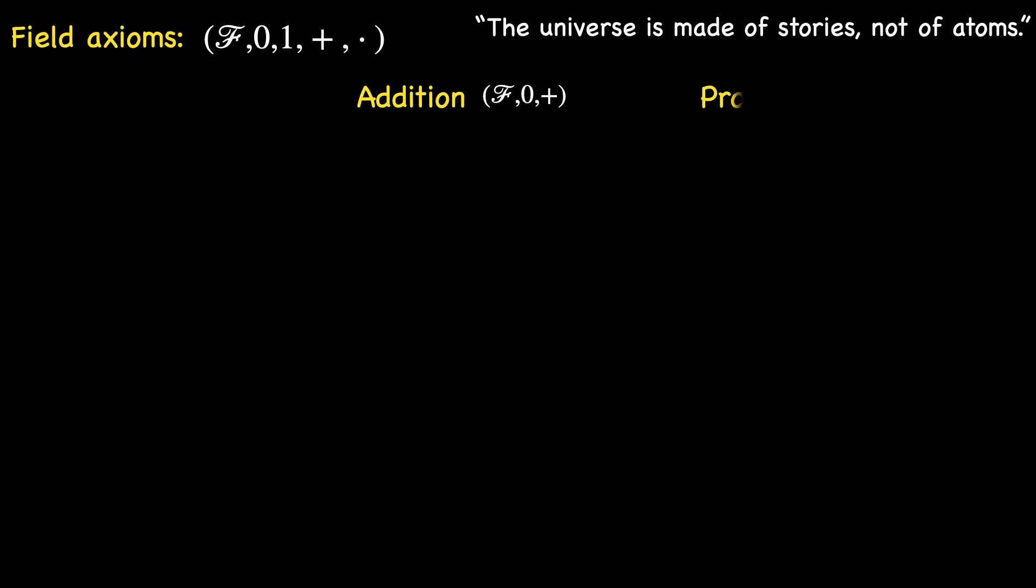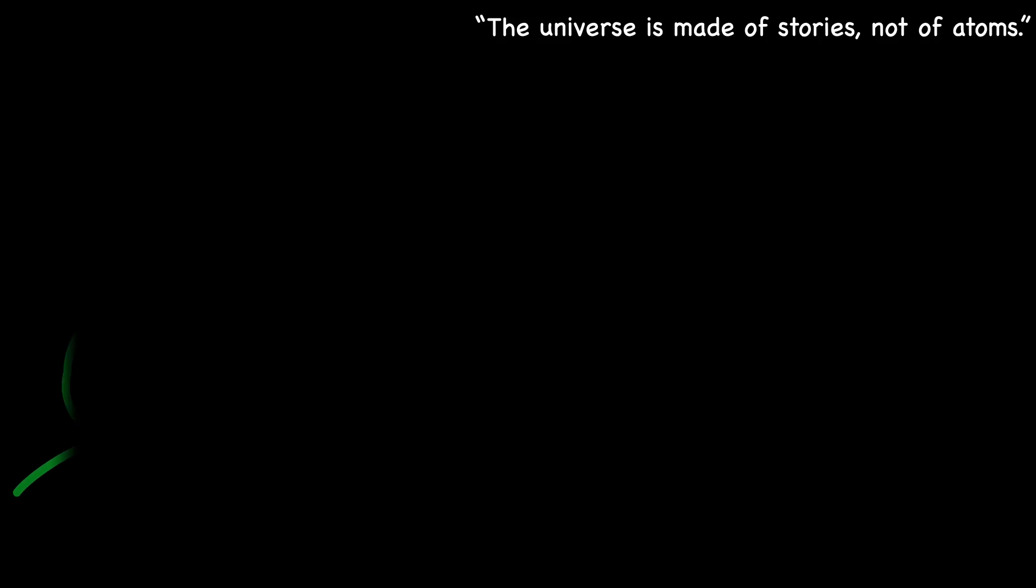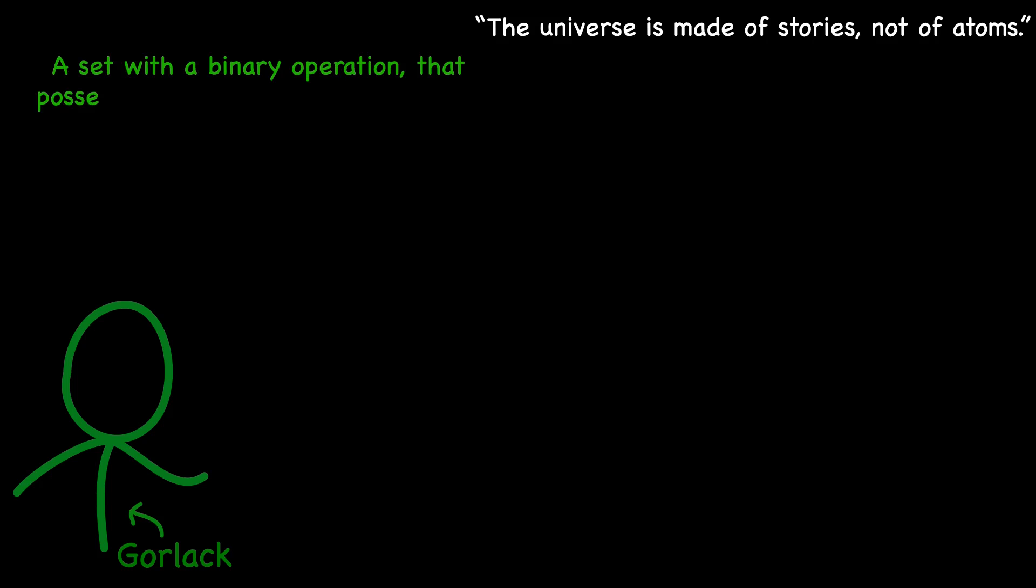For those eager to enrich their mathematical vocabulary, a set endowed with a binary operation that is associative, possesses an identity, and ensures every element has an inverse, is bestowed with the esteemed title of a group. Moreover, when the operation within a group is commutative, we characterize it as an abelian group.